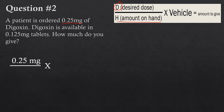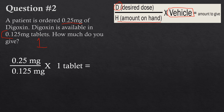How much do we have on hand? It's a tablet question — we have 0.125 milligrams available, as stated in the question, so 0.125 milligrams goes on the bottom. The vehicle is straightforward: 0.125 milligrams per tablet, so the vehicle is one tablet. Solving: 0.25 divided by 0.125 — milligrams cancel — gives you 2. Two multiplied by one tablet gives you two tablets.